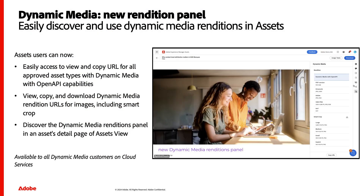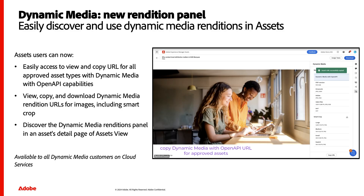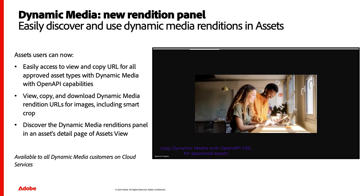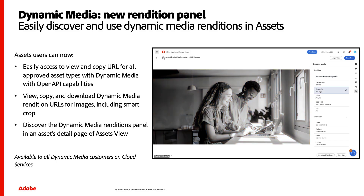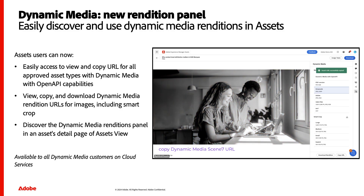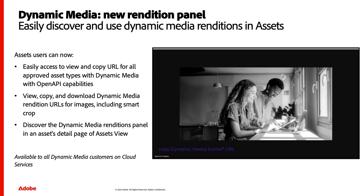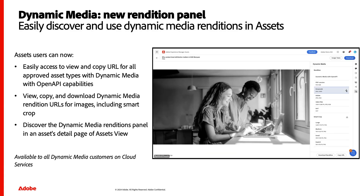For Dynamic Media users, there's also a new renditions panel to allow you to quickly access renditions while you're in the assets UI. Users can go in, find an asset, and see all the different variations — then click and choose what they'd like to download, copy the URL, and see the direct path for that asset.